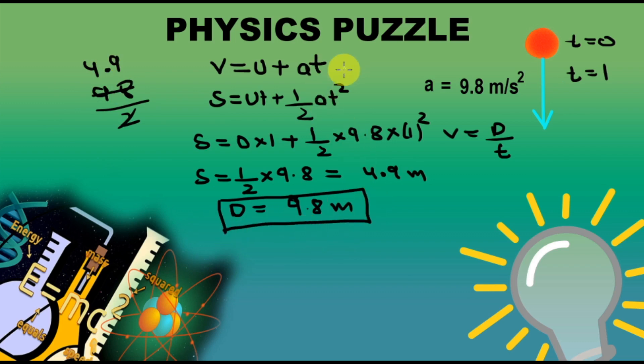If we calculate the distance traveled by this formula, we get 9.8 meters, and if we calculate the distance traveled by this formula, we get 4.9 meters, which is half of 9.8 meters, which is really weird.